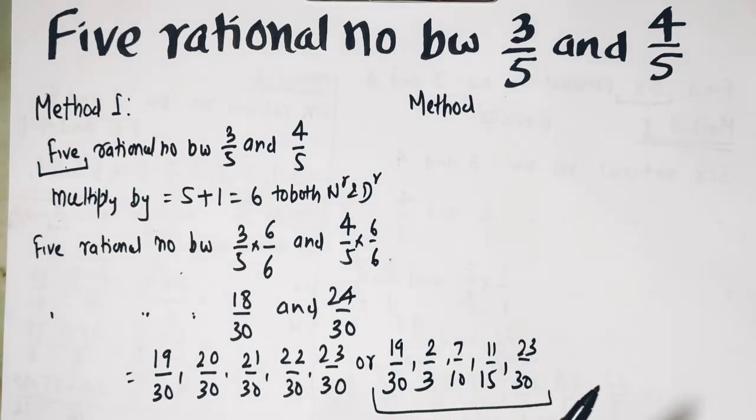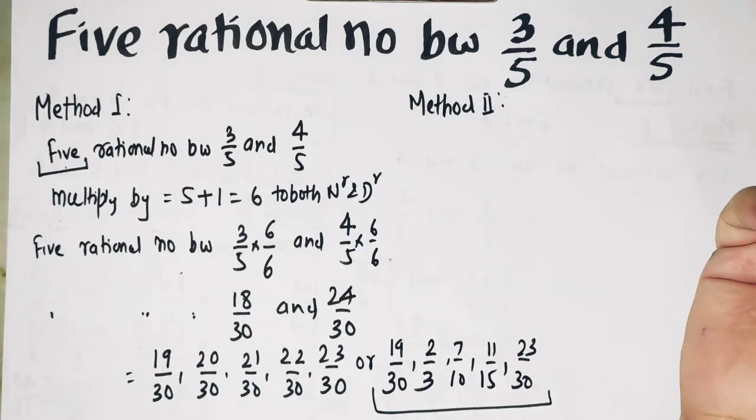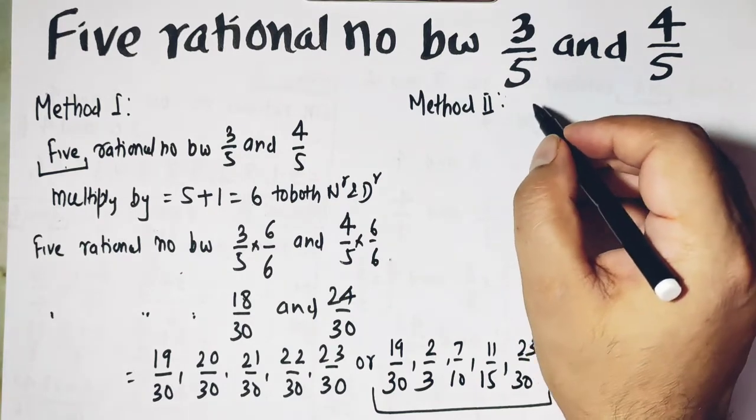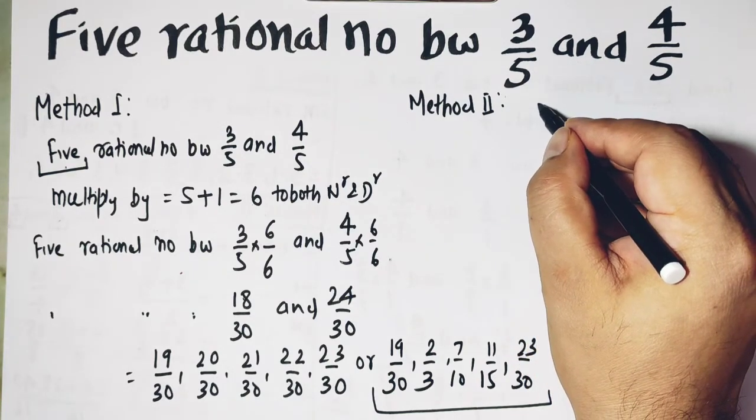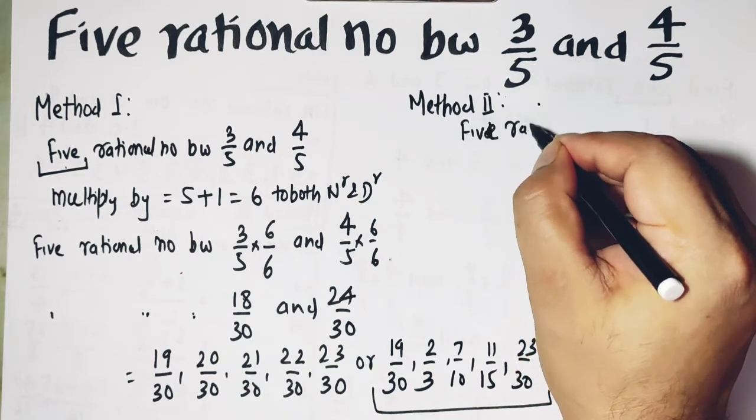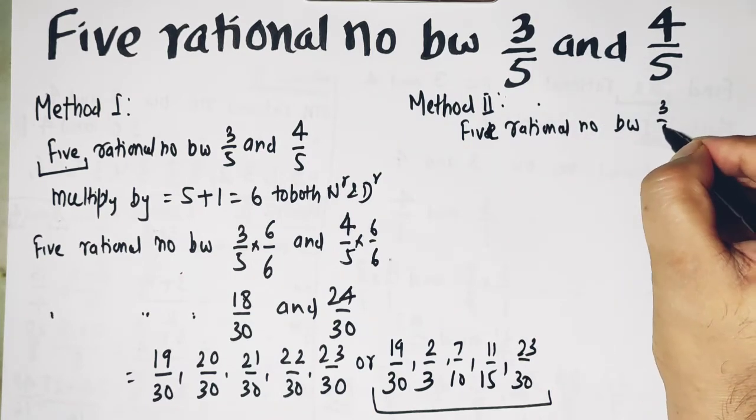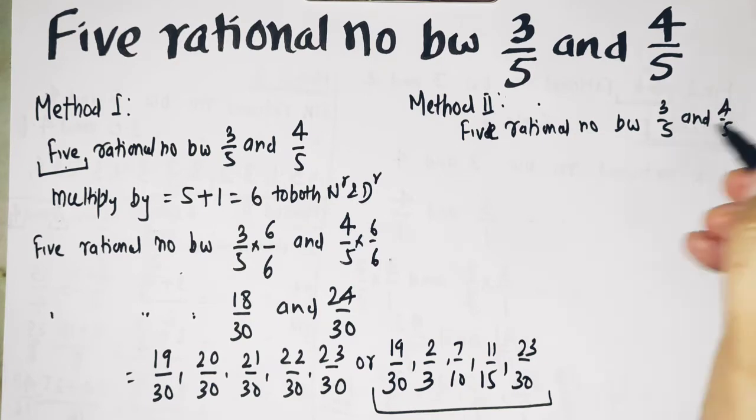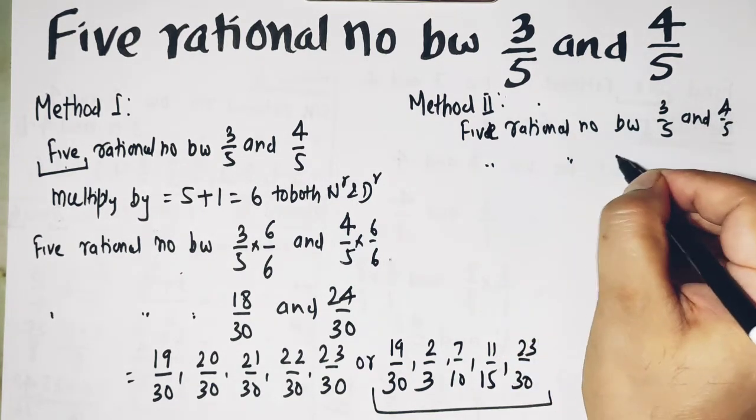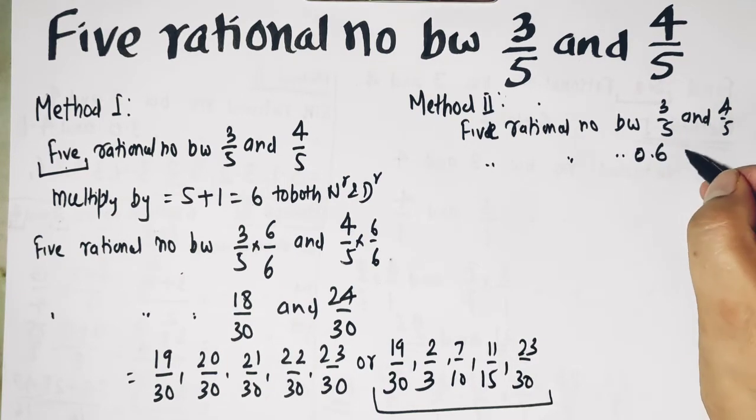And now I am using a second method. At this point you can stop watching this video if you are only looking for the answer, but if you are looking for different methods, then you can continue. Method 2 is an interesting method. We have to find 5 rational numbers between 3 upon 5 and 4 upon 5. Now divide this: you know that we get 0.6 and divide this, we get 0.8.